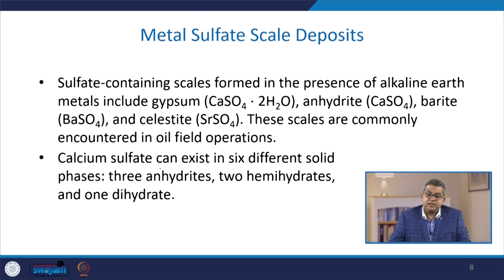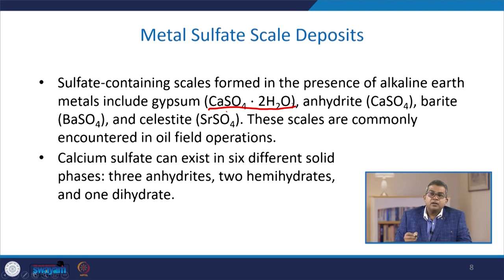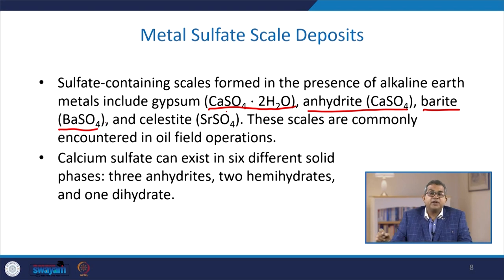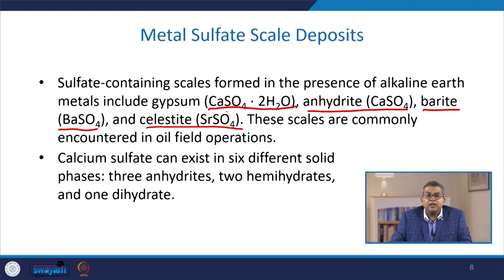Sulfate-containing scales form in the presence of alkaline earth metals. These include gypsum (CaSO₄·2H₂O), anhydrite (CaSO₄), barite or barium sulphate (BaSO₄), and celestite (SrSO₄). These scales are commonly encountered in oil field operations, and we need to know their concentration and treat accordingly.